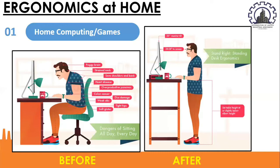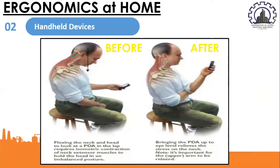Another example would be handheld devices. Many people are spending more and more time with their tablets and smartphones, but these are not free of ergonomic stressors. As you can see in the first photo, the man is flexing his neck and head to look at his device in his lap, which is obviously wrong because it requires isometric contraction of neck extensor muscles to hold the head in an imbalanced posture. If we continue to do this, we will most likely experience strain on the neck. Therefore, the right posture is shown in the second image — we should bring the device up to eye level, because doing so would relieve the stress on our neck.